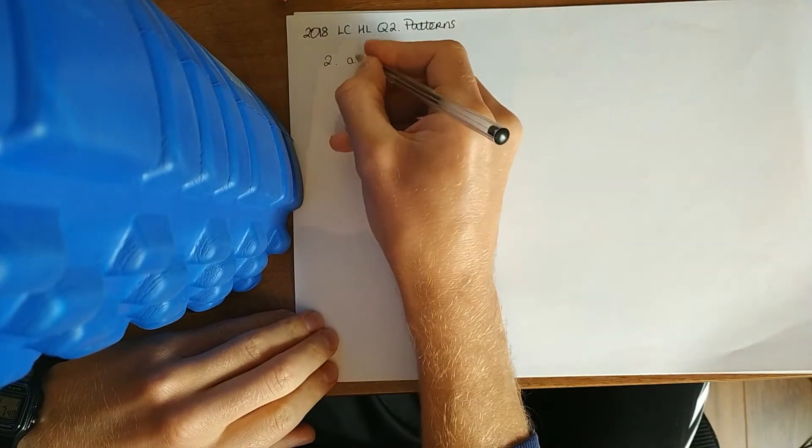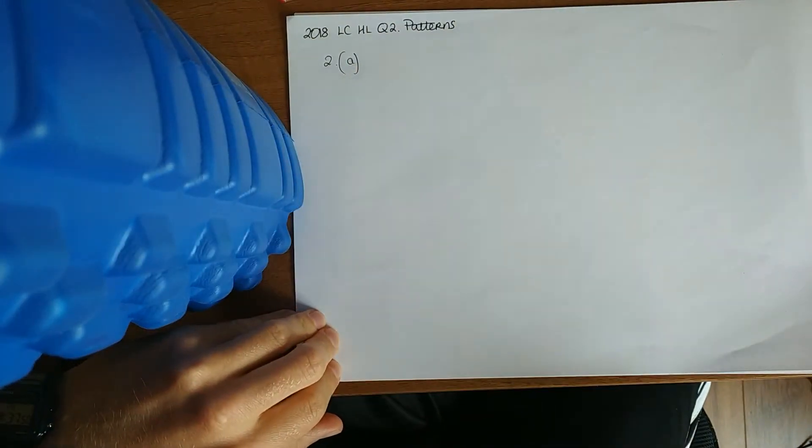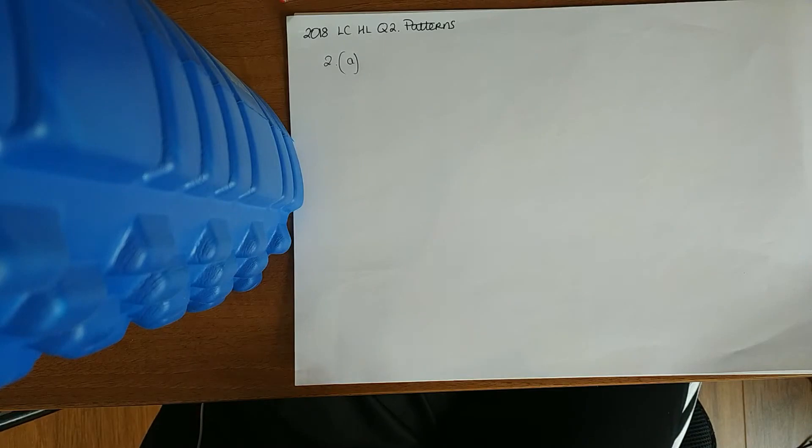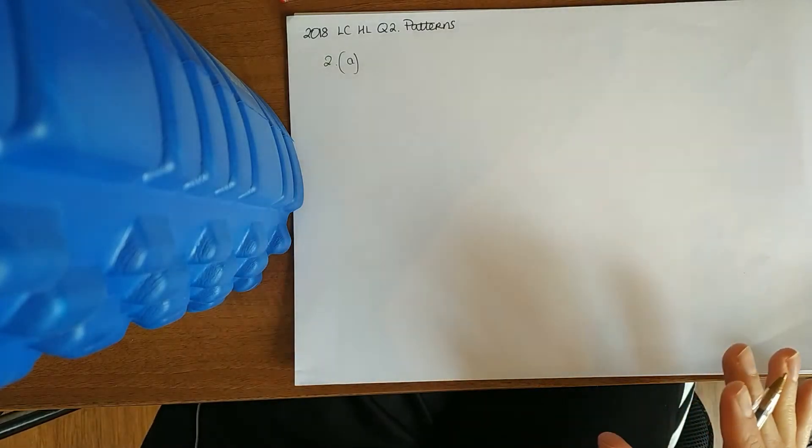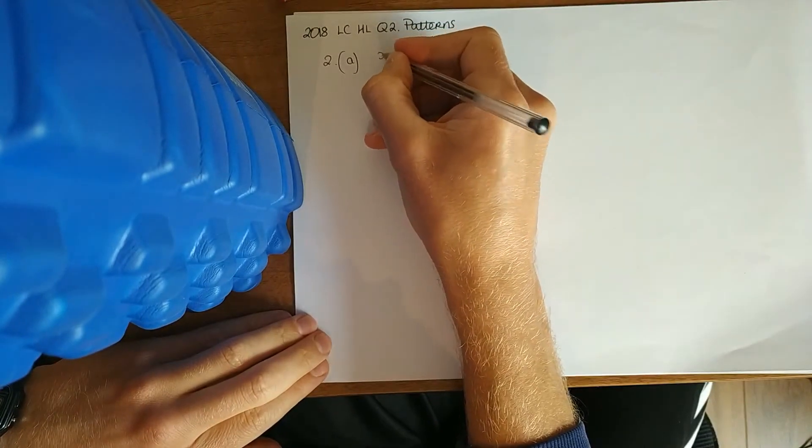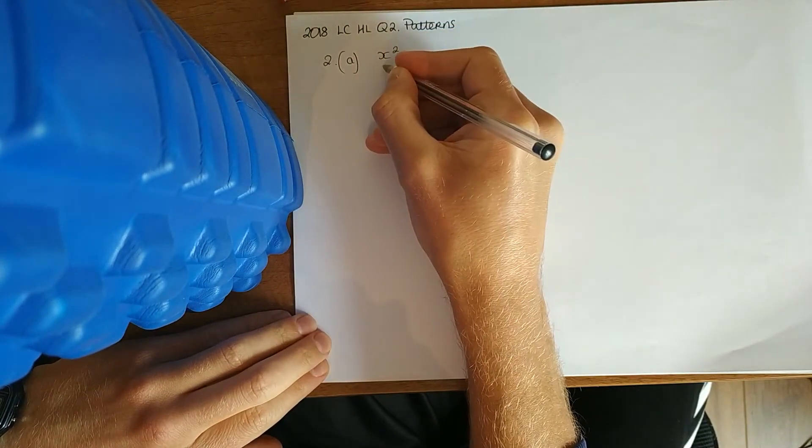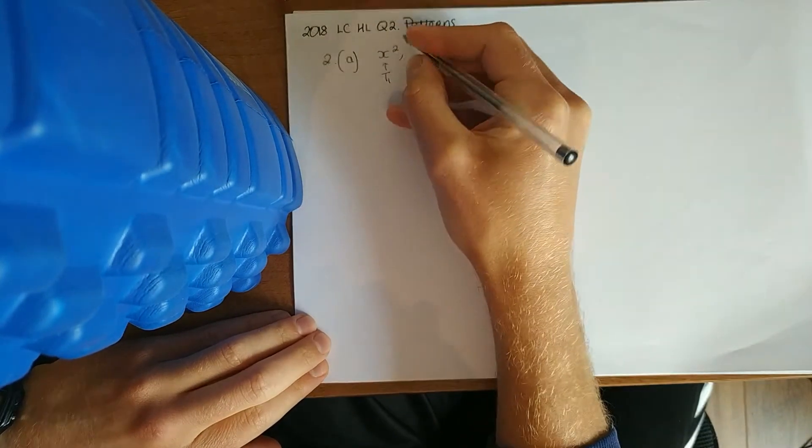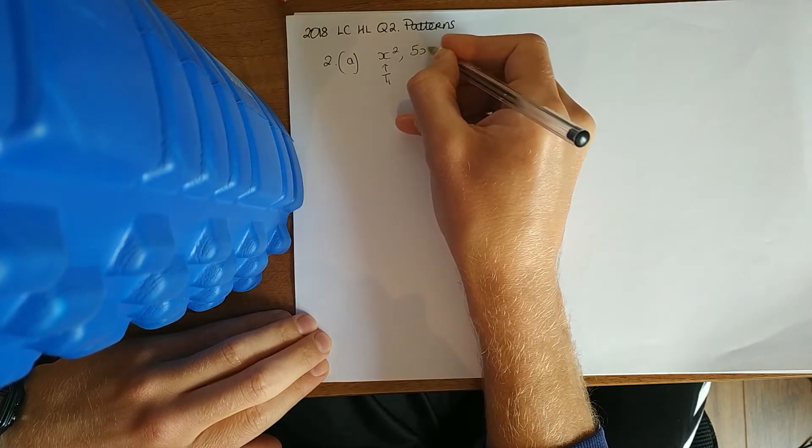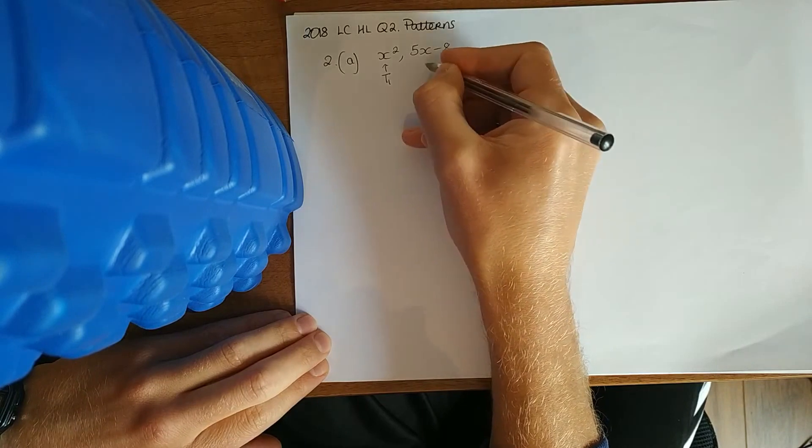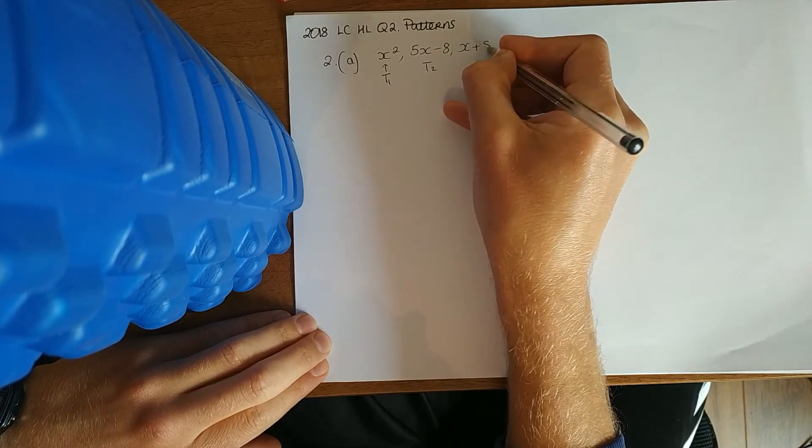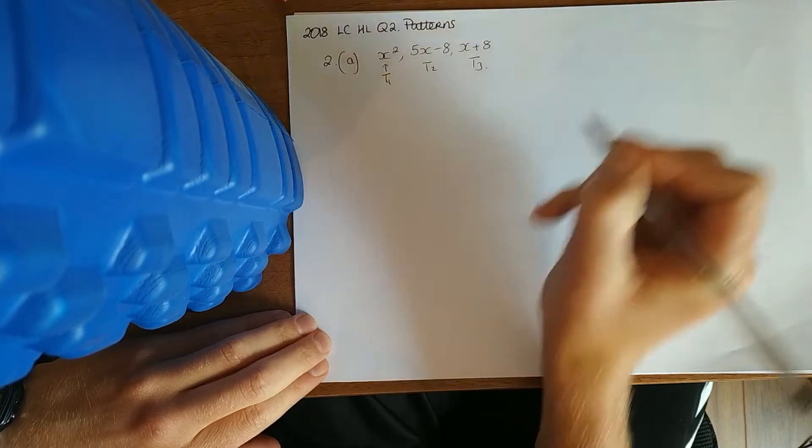So in question 2a, the first three terms of a geometric series—geometric means they're being multiplied and series means they're being added together. So the first three terms are x squared, then it's going to be multiplied by a common ratio and we'll get 5x minus 8, and it's going to be multiplied by the same common ratio and we'll get x plus 8. There's the three terms in that order.